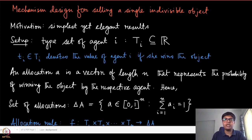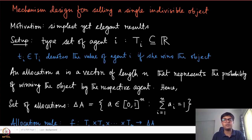We get a very rich set of elegant results in this simple setting, and we can actually go beyond the limits of deterministic mechanisms. We will look at some randomized mechanisms as well.